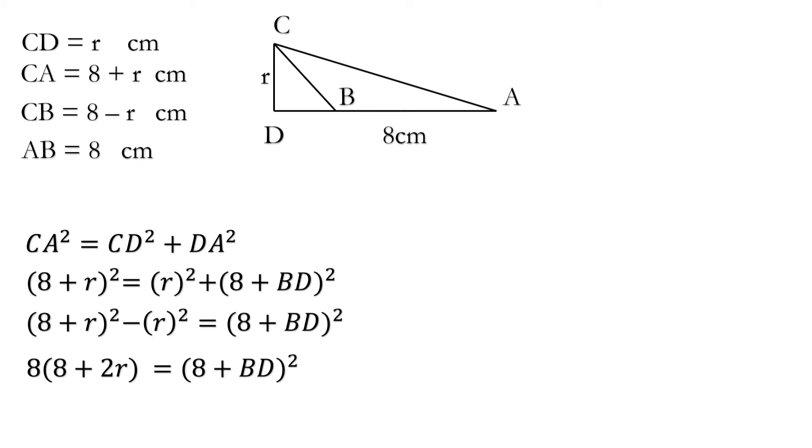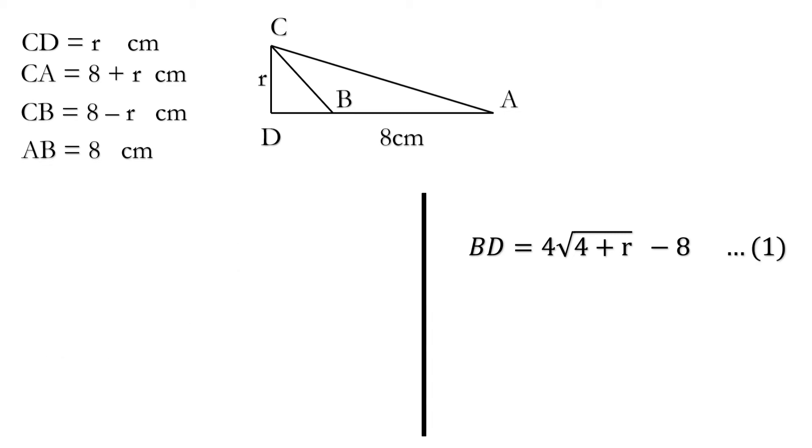Applying the identity a square minus b square is equal to a plus b times a minus b, we get 8 multiplied by 8 plus 2R is equal to 8 plus BD whole square. And we get BD is equal to 4 under root 4 plus R minus 8. Say this is our equation first.